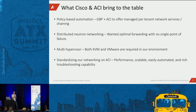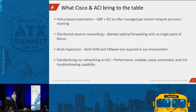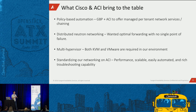What Cisco and ACI bring to the table for us includes policy-based automation, GBP and API for managed per-tenant network service and service chaining with above-the-hypervisor services, distributed neutron networking, and multi-hypervisor support. We're KVM-only right now but plan to offer VMware as well. Standardizing networking at SunGuard on ACI is a big thing for us — we were already a big ACI user even pre-OpenStack.